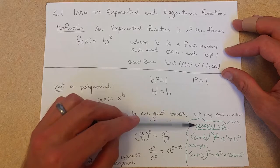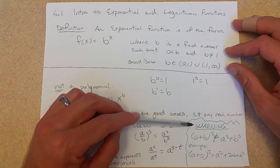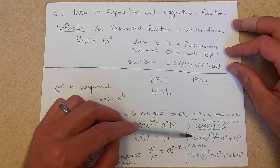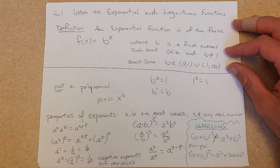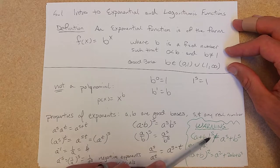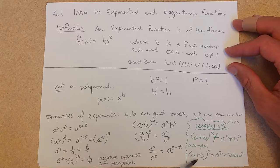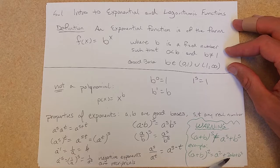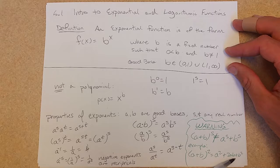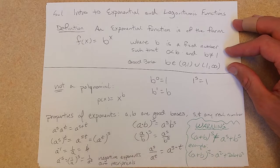Now do not do what's called the freshman's dream, which is a plus b raised to the s power. It's definitely not a to the s plus b to the s. You can see that with a simple example. If s was 2, a plus b squared, you'd foil it out and you would get a squared plus 2ab plus b squared. So that middle term right there would be the reason it would not be equal here.